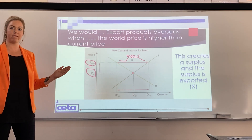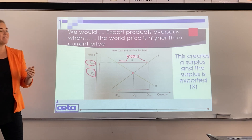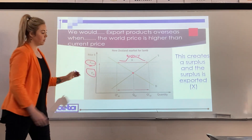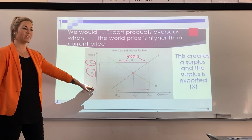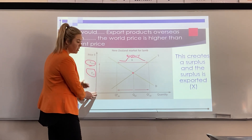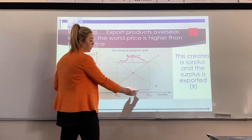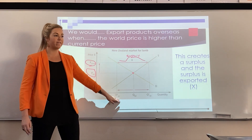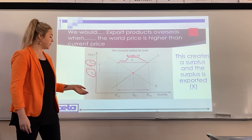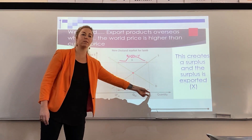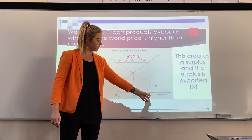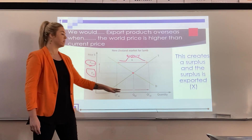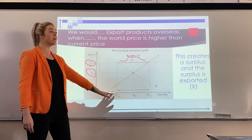The way we read this graph is using our quantity line at the bottom — the x-axis. We can see that if there were numbers along here, the supply figure would be greater than the demand figure. For example, supply might be 7,000 and demand might be 3,000.